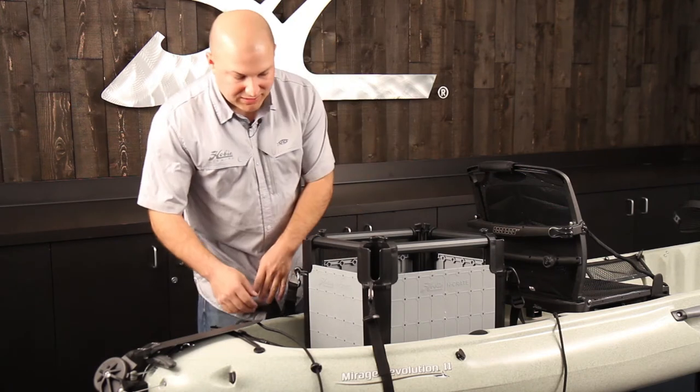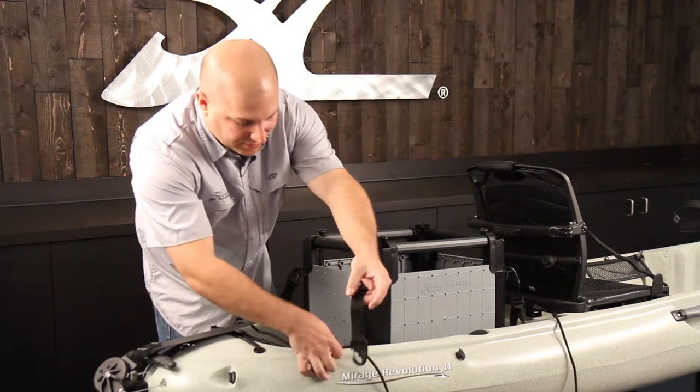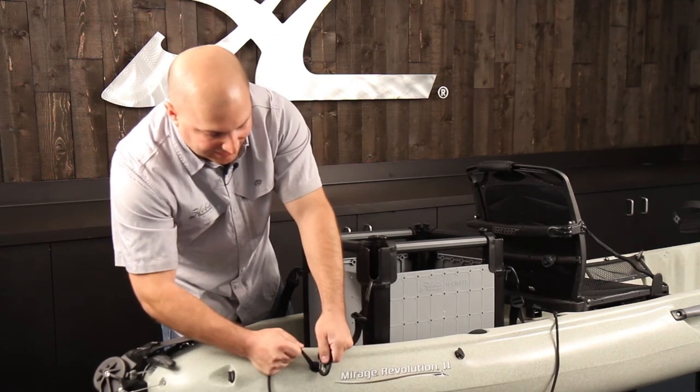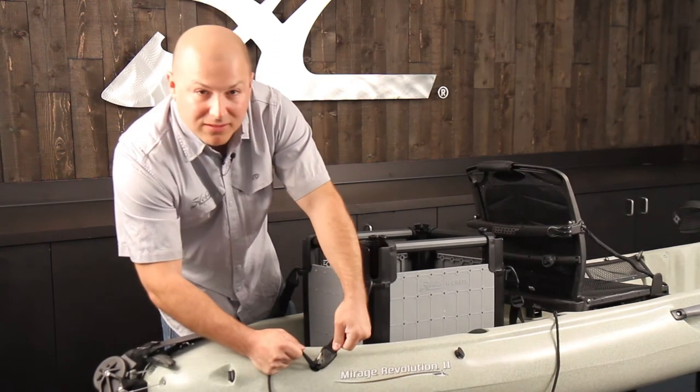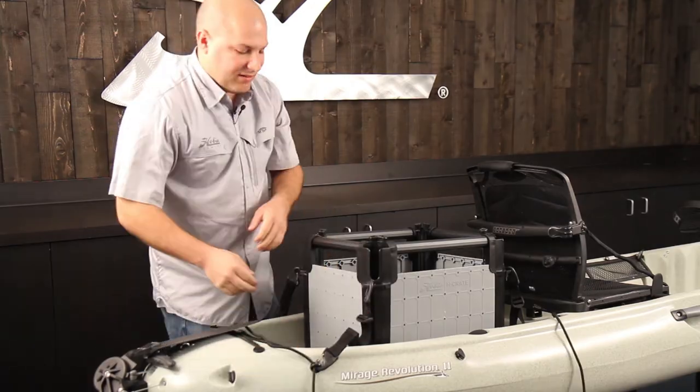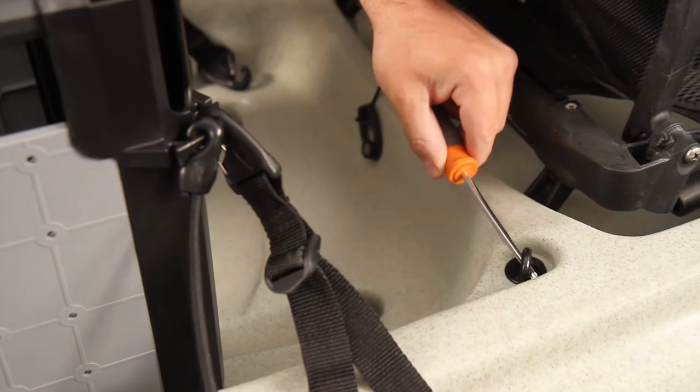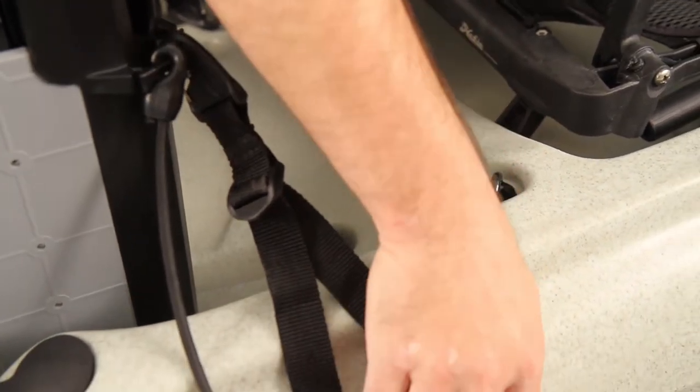Another tip: when you are connecting the clip in behind the bungee, a light tug on the bungee will allow the strap to clear easier. When installing the crate, I like to turn the pad eye 90 degrees to make it easier to install the clip.